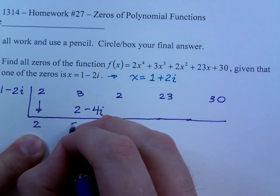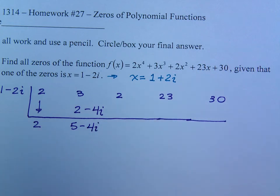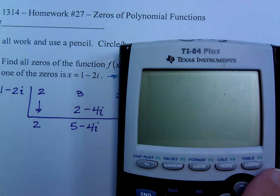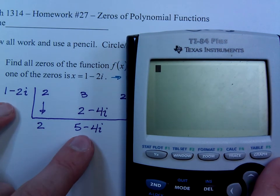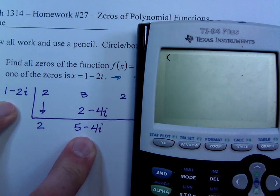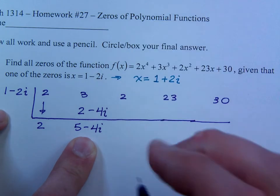When you add these guys, you get 5 minus 4i. Now, I'm feeling kind of lazy here, so I'm just going to use my calculator, but you won't be able to do this on the test. So, it's whatevs. I need to multiply the 1 minus 2i times the 5 minus 4i. Remember, your i is going to be above your decimal. I get negative 3 minus 14i. Sweet.